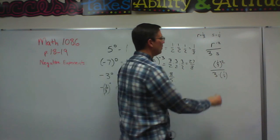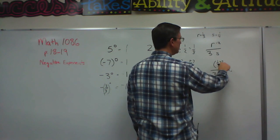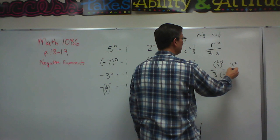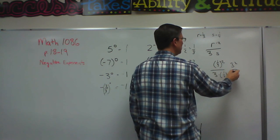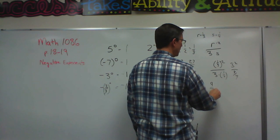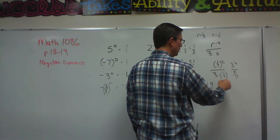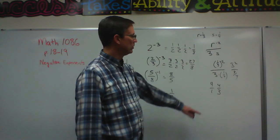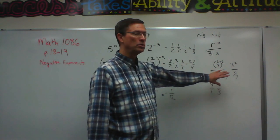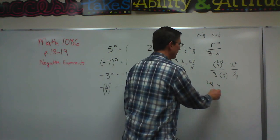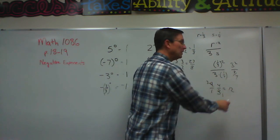One-third to the negative second, so the negative means I flip it, and it becomes three to the second power. Multiply these together, and I get three-fourths, so I have nine over three-fourths, or solve it and multiply by four-thirds, because when you divide by a fraction, you invert the fraction and multiply, and now I can just simplify this, and the answer is twelve.